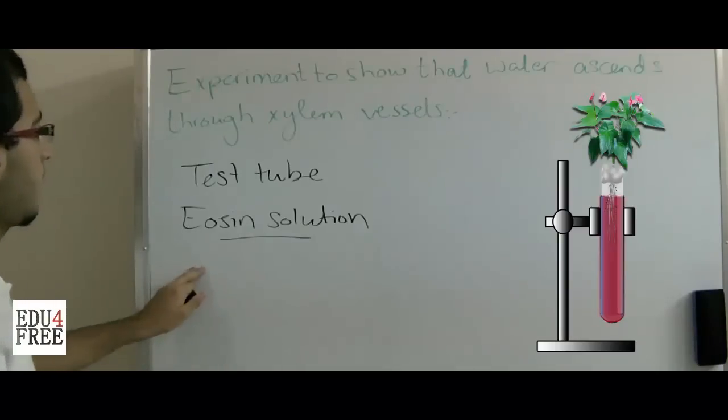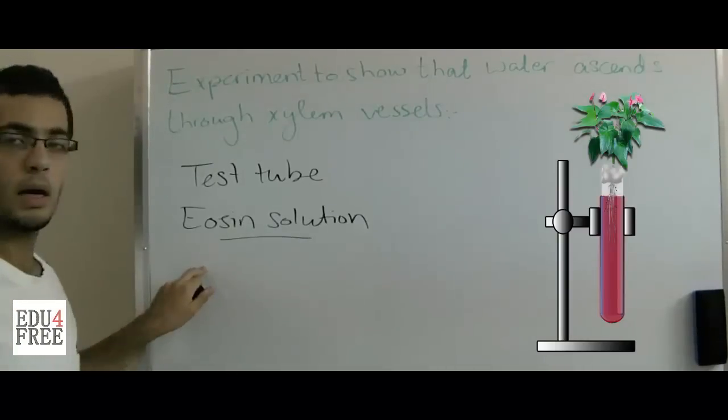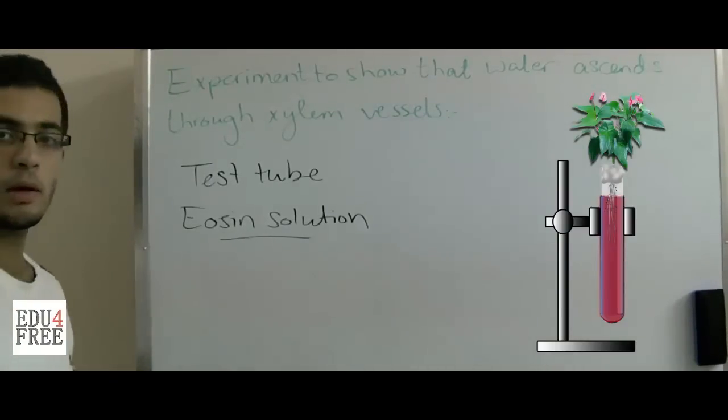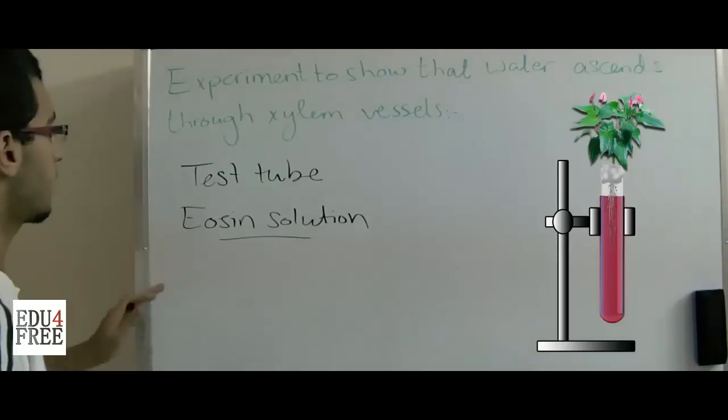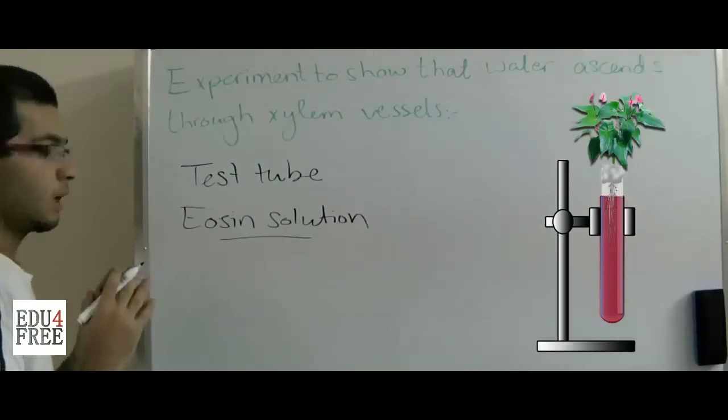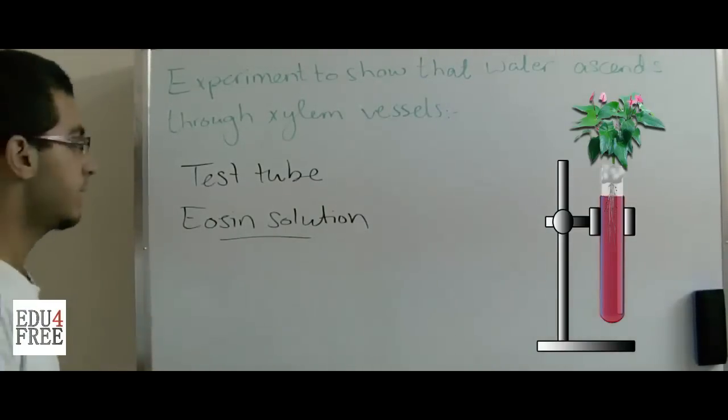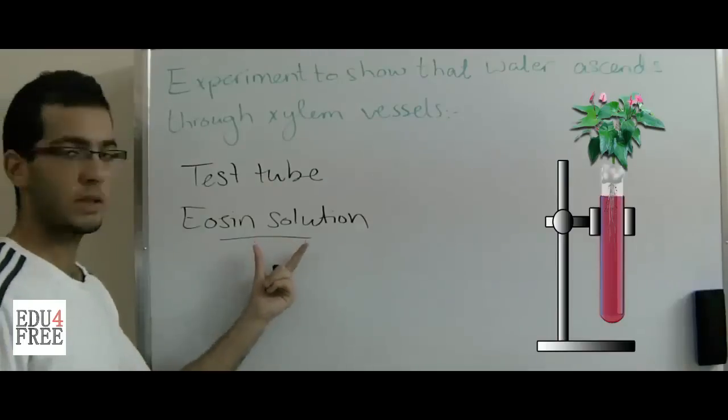We are going to dip a small flowering plant into this test tube so that the root system is immersed in the eosin solution.